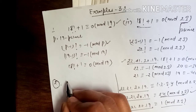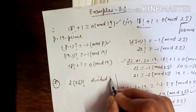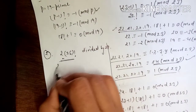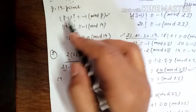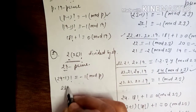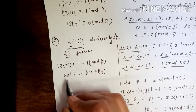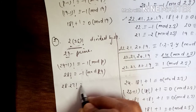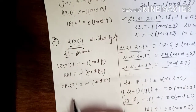Now we move to example number 2. Find the remainder when 2 × 26! is divided by 29. Since 29 is a prime number, we apply Wilson's theorem: (p-1)! ≡ -1 (mod p). So 28! ≡ -1 (mod 29). We need to find 2 × 26!, so we break down 28! step by step. We write 28! = 28 × 27! = 28 × 27 × 26!.